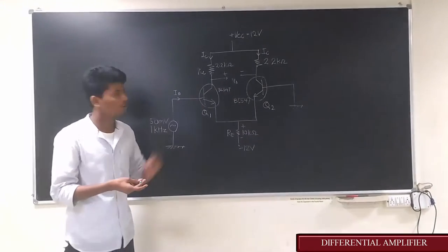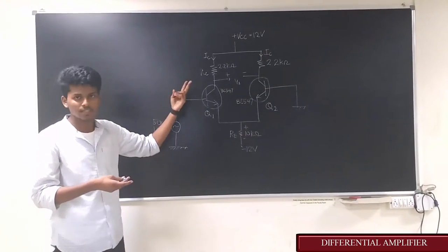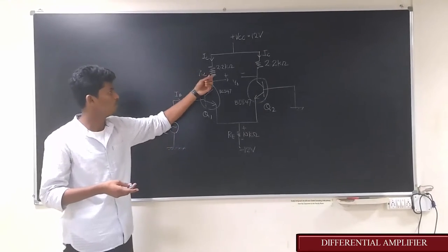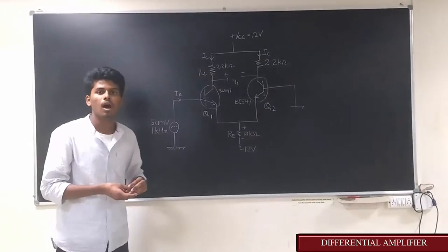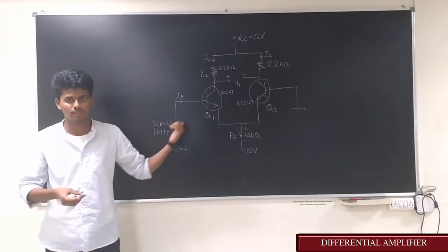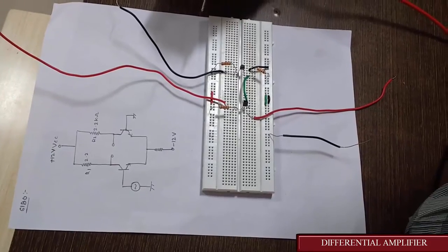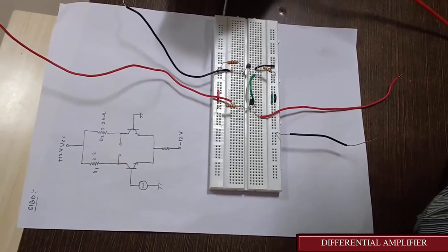A dual voltage supply of 12 volts is required. Two resistors of 2.2 kilo ohms each will be needed. Now let's look into the implementation of the differential amplifier on a breadboard.